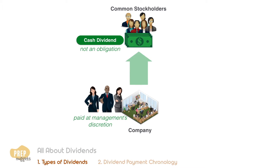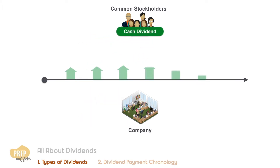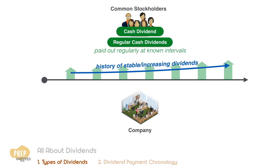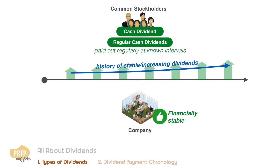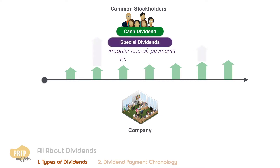Cash dividends are typically paid out regularly at known intervals and are known as regular cash dividends. A long-term record of stable or increasing dividends is widely viewed by investors as a sign of a company's financial stability. In addition, such companies also pay irregular one-off dividends, commonly called special dividends or extra dividends.